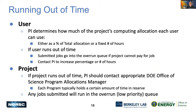You can run out of time in two ways. The PI determines how much of a project's computing allocation each individual user gets — either a percentage of the total allocation or a fixed number of hours. If the user runs out of time, they can still submit jobs that will go into the overrun queue if the project is able to pay for the job. The user will need to contact the PI to get an increase in their percentage or hours if available. However, if the project runs out of time, the PI will need to contact the DOE Office of Science Program Allocation Manager to get additional time. Each program typically holds a certain amount in reserve for these situations, and submitted jobs will still run in the overrun queue, but at very low priority.